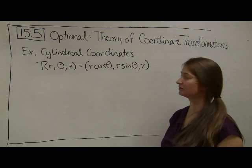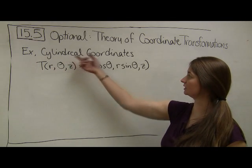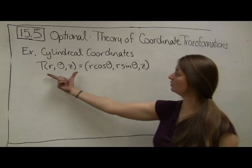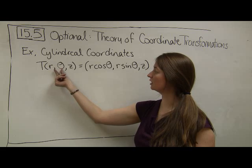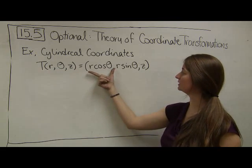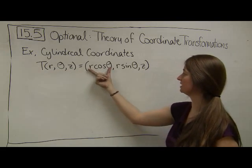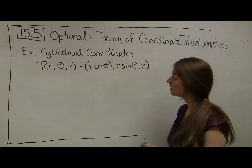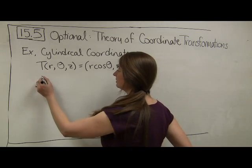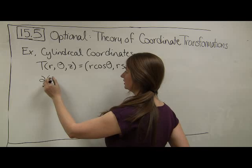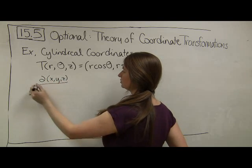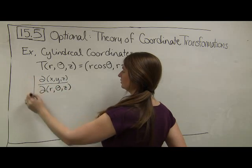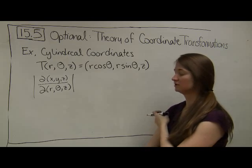Let's illustrate this coordinate transformation with a concrete example of cylindrical coordinates. When we convert cylindrical coordinates, we have a coordinate transformation where my inputs are r, theta, and z, and my outputs are: the X-coordinate given by r cosine theta, the Y-coordinate given by r sine theta, and the Z-coordinate is just z. In order to do this calculation, we find the total derivative of (x, y, z) with respect to all of the variables r, theta, and z, and I want the determinant of this derivative matrix.